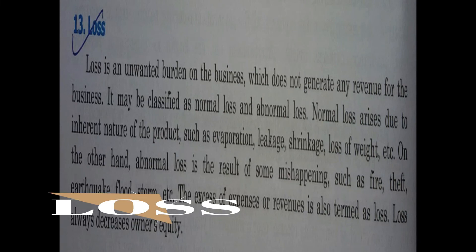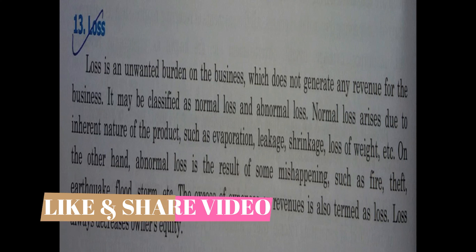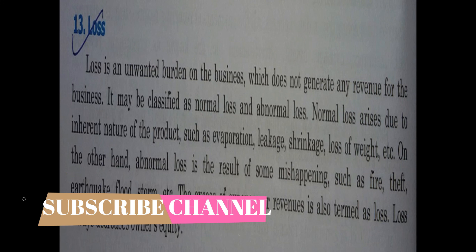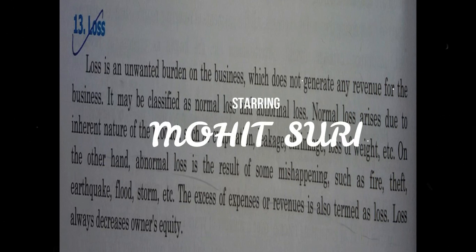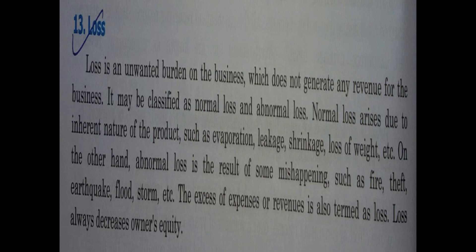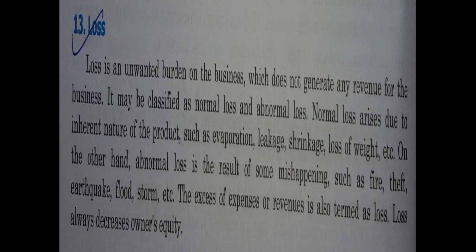Loss is an unwanted burden on the business. Loss may be classified as normal loss and abnormal loss. Normal loss is due to the inherent nature of the product — for example, evaporation, leakage, shrinkage, or loss of weight, such as flour dust causing weight reduction. Abnormal loss results from some mishap such as fire, theft, earthquake, flood, or storm. Such losses always reduce the owner's equity.